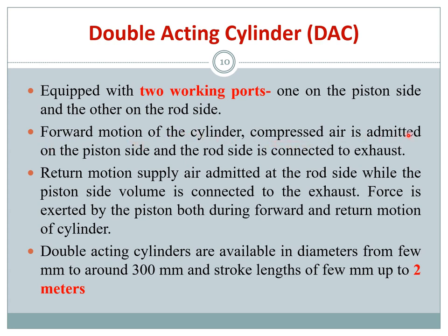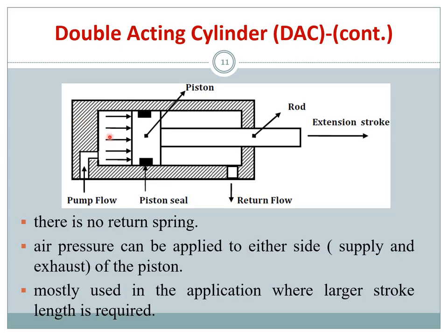For forward motion, compressed air is admitted to the piston side and the rod side is connected to exhaust. There is no spring in a double acting cylinder — so when drawing circuit diagrams, make sure not to draw a spring for a DAC. Air pressure can be applied to either side depending on the desired operation.